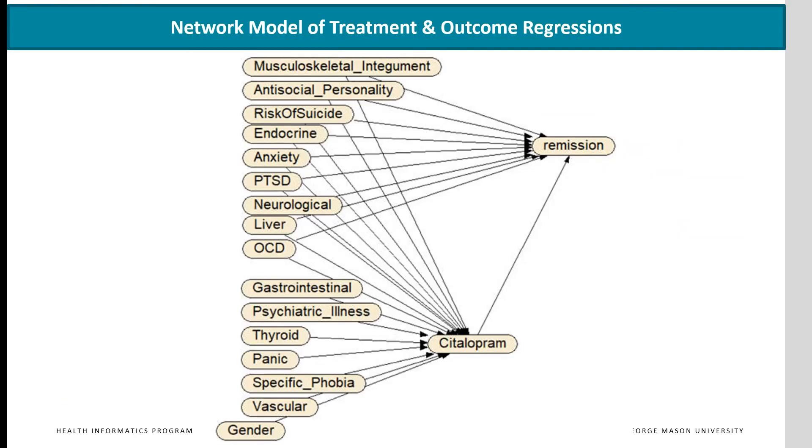Here we see how the two regressions were combined to create a single network model. The first regression had citalopram as response and baseline diseases as independent variables. The second regression had remission of symptoms as response and citalopram and baseline comorbidities as independent variables. Once the structure of the network has been determined, then parameters for the combined network are assessed by fitting the network to data using a software such as Netica.